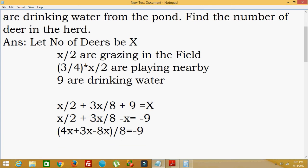So 4x + 3x = 7x. 7x - 8x = -x. That is -x/8 = -9.